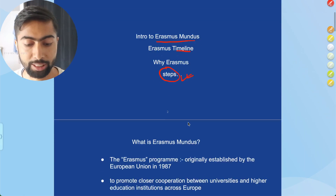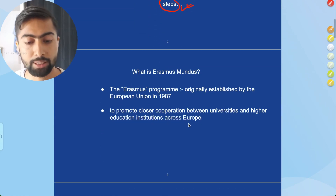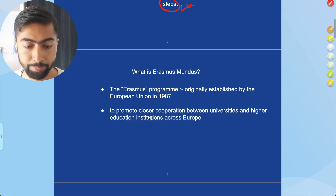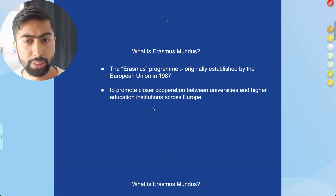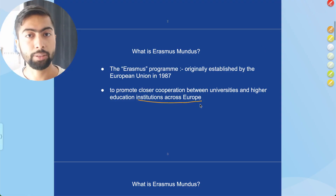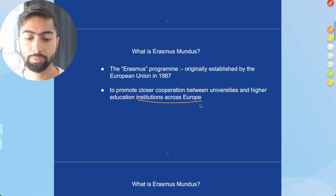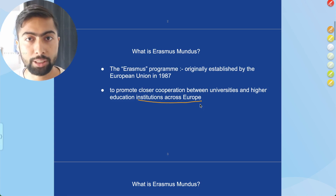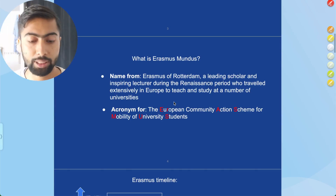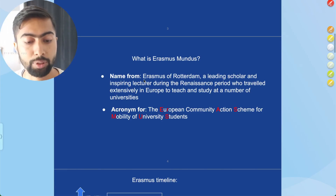So what is Erasmus Mundus? Erasmus Mundus is a program under the European Union, which was originally established by the European Union in 1987. The basic objective of the program is to promote closer cooperation between universities and higher educational institutions across Europe. Initially it was created to increase collaboration and cooperation between universities inside Europe.